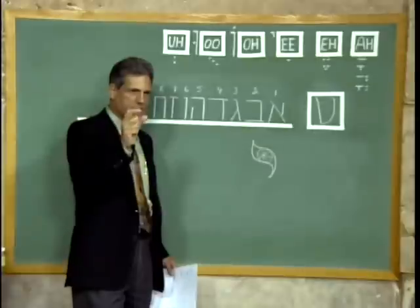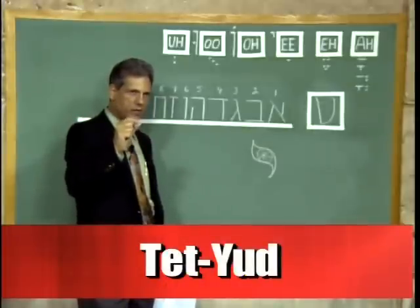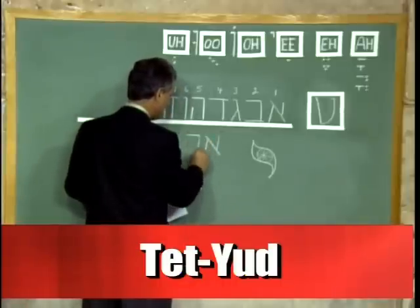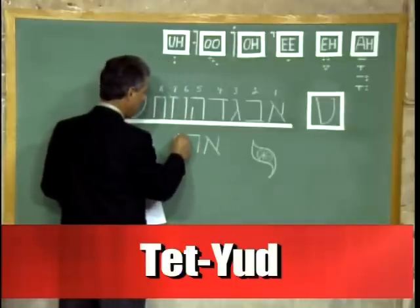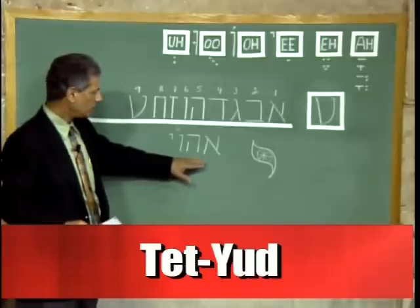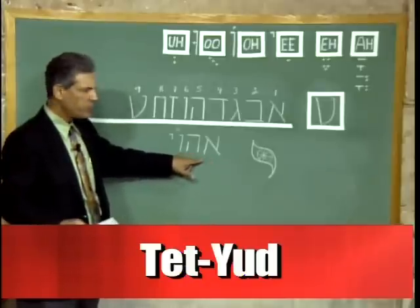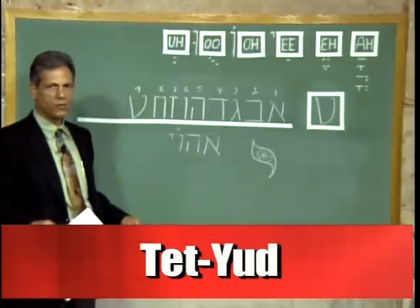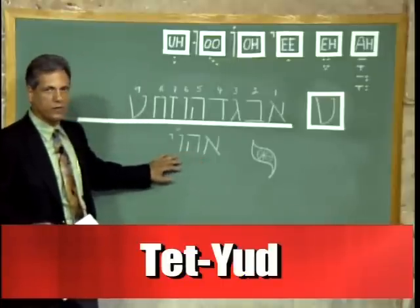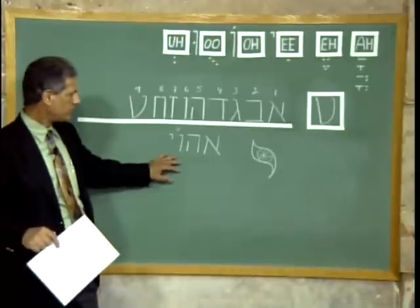The letter Yud is used in that combination of four letters that we occasionally use as grammatical helpers. Those four letters are Aleph, He, Vav, and Yud. We put a little tag on top just to remind us that this is not a word — it's just a combination of letters that, when they appear in a word without a vowel, they will be silent. If they do have a vowel, then they have a sound and will be heard.